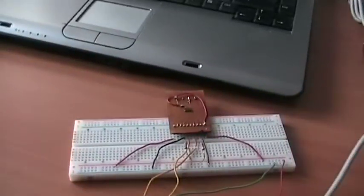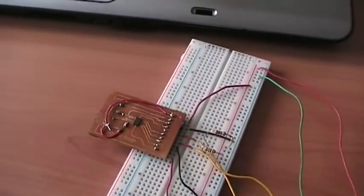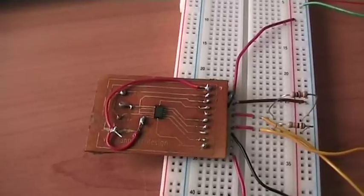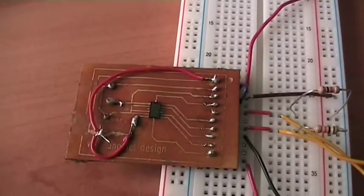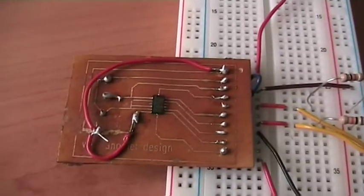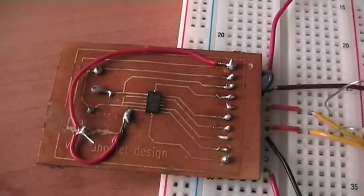You can see here this is the breakout board I created. I used the press and peel paper and ferric chloride etchant, and this is what I've been able to create.